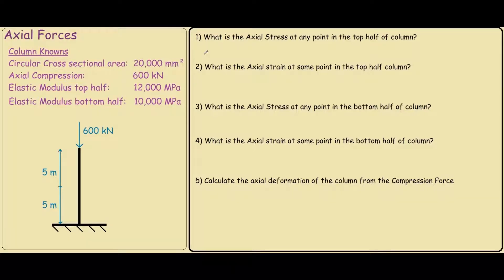So our first question is asking us what the axial stress is at any point in the top half of the column. So using the formula that stress equals force divided by area, we can see that the force is 600 kN. And the area is 20,000 mm². We are going to convert the force to newtons, so 10 to the power of 3 to keep units consistent. So our stress is 30 MPa. MPa is newtons on mm².